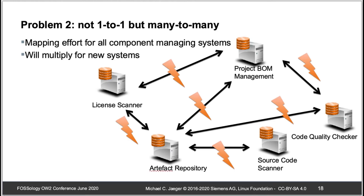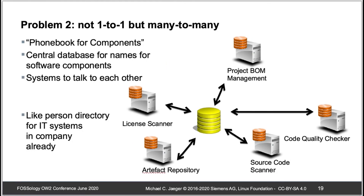The mapping problem arises because different systems use different ways of naming components. Some use packaging URLs, some use vendor-component-version format, some name vendors or components differently. There can be very individual ways of expressing a component name, and for every connection between two systems you might come up with an individual mapping — which is bad because it may cause a lot of effort.